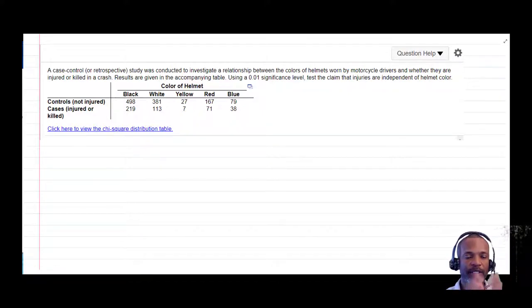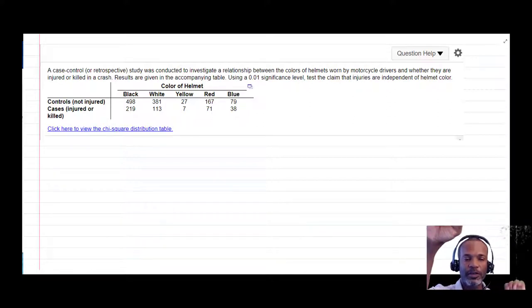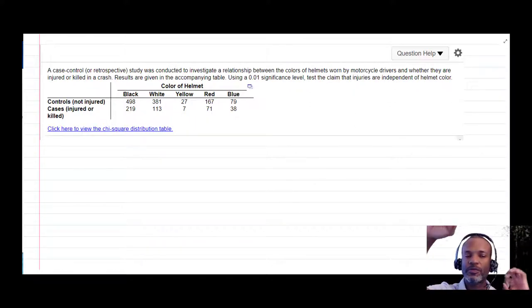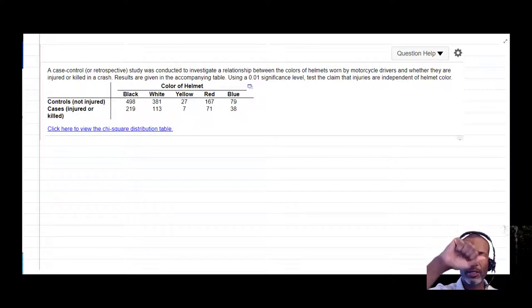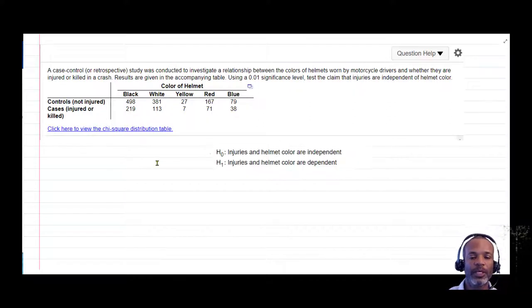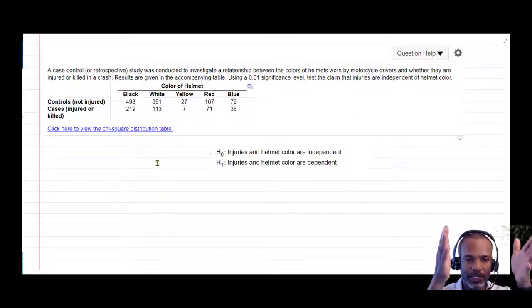So how can we turn that into a statement? Our test has to have the word independence, and we have two variables, helmet color and whether or not there was an injury. So is whether or not you get an injury independent of the color of the helmet? So that can be set up as a hypothesis test. Injuries and helmet color are independent. Your null hypothesis will always be a statement of independence.